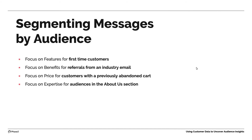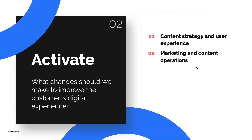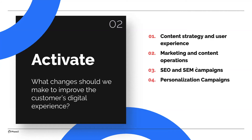Which brings us back to the approach and the last part: how do we activate our customer data? What changes should we make to improve the customer's digital experience? What strategies and tactics do we need to pursue? Based on the measurement model, we've got reporting and dashboarding, and we understand our audience segments. Now we have specific audience insights that can inform decisions across content strategy and user experience, across marketing and content operations, across our SEO and SEM campaigns, across our personalization campaigns — and all those can be informed by A/B testing. That's really the sum of Phase 2's approach to addressing this customer data problem and meeting the expectation of audiences and of your leadership.